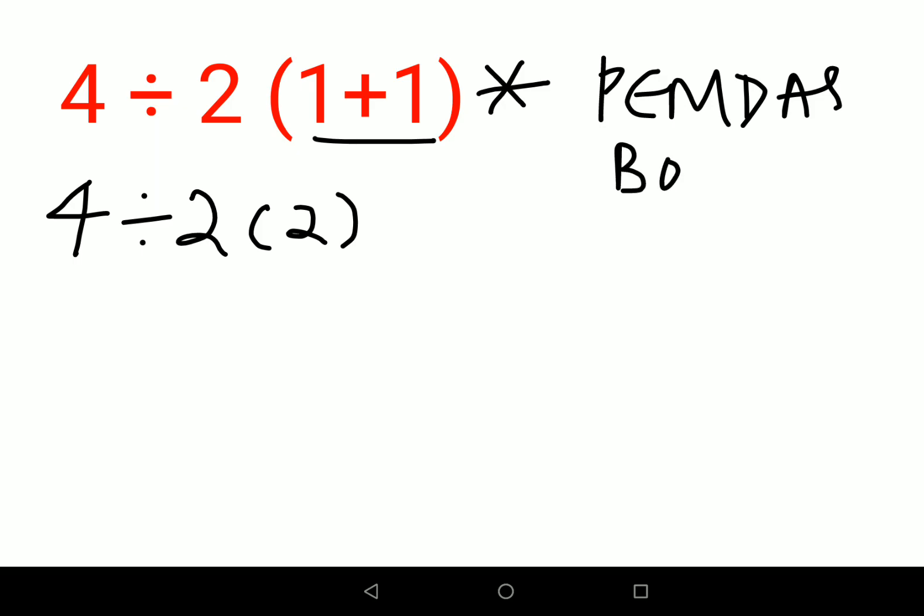Now according to BODMAS, first we'll do the division, so 4 divided by 2 gets you 2. And then 2 into 2—the bracket means there's a multiplication sign between the two digits—so 2 into 2 gets you 4. This is one kind of answer.